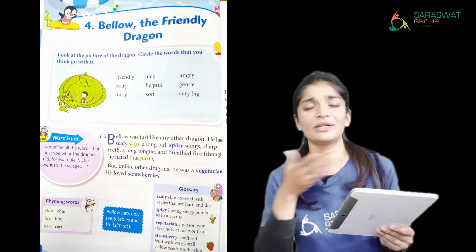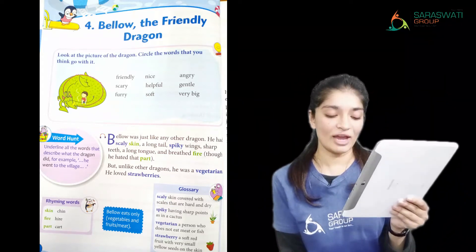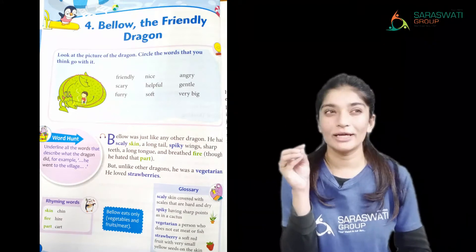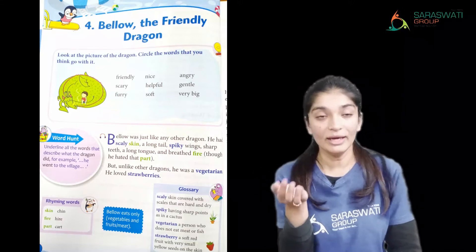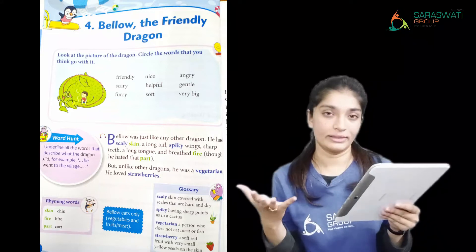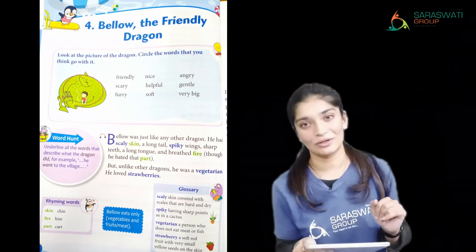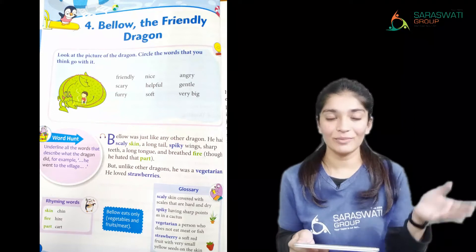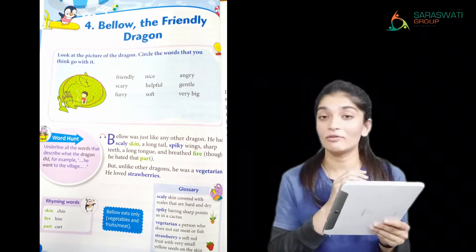Everyone loves strawberry, I guess. A strawberry is a soft red fruit with very small yellow seeds on the skin. It is very soft, sweet and slightly sour, and on the skin there are small yellow seeds. It is a really pretty fruit — I personally like strawberries.